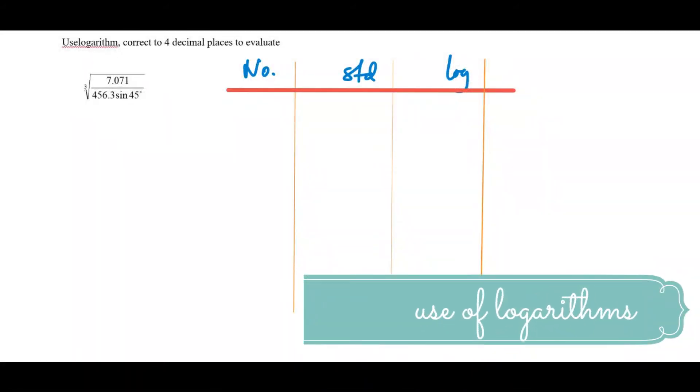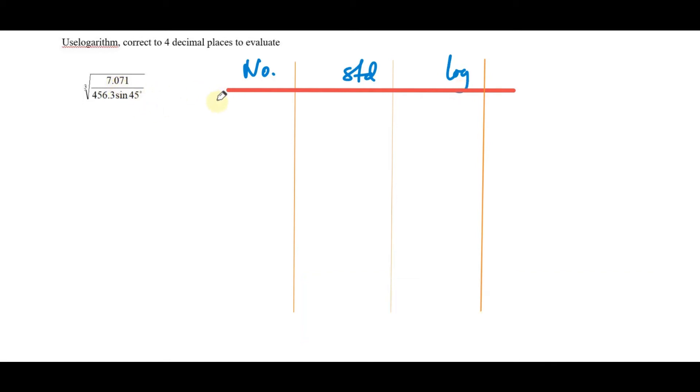Use logarithms correct to four decimal places to evaluate. We'll need to draw a table with columns for the number, standard form, and log. The first one is 7.071. This number in standard form is written as 7.071 times 10 raised to power 0.